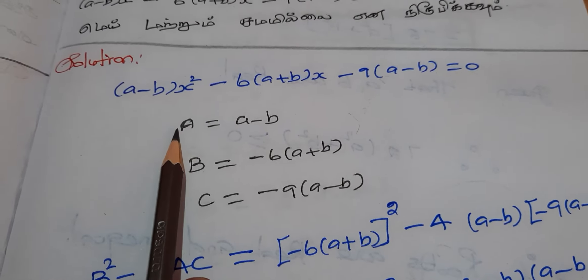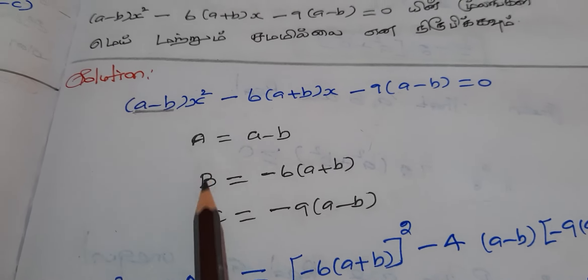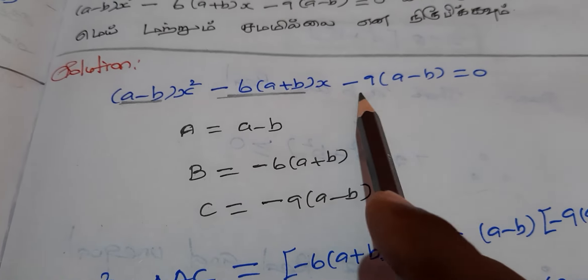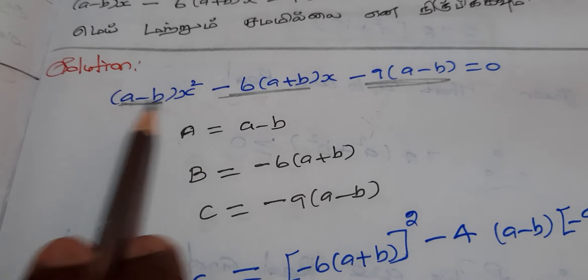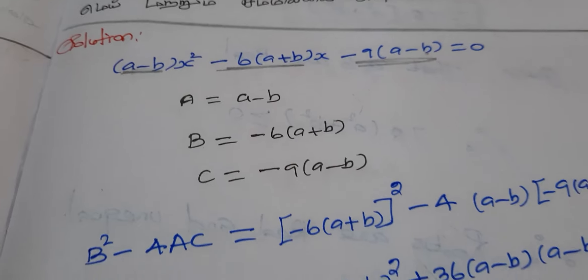What is the coefficient of x²? What is b, the coefficient of x? What is c, the constant? A = a-b, B = -6(a+b), C = -9(a-b).